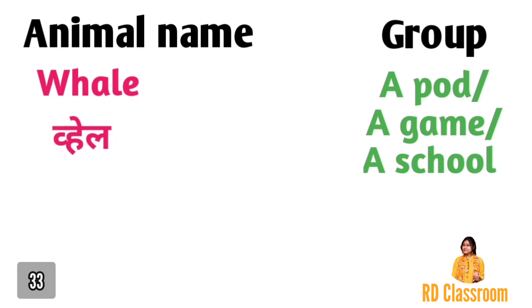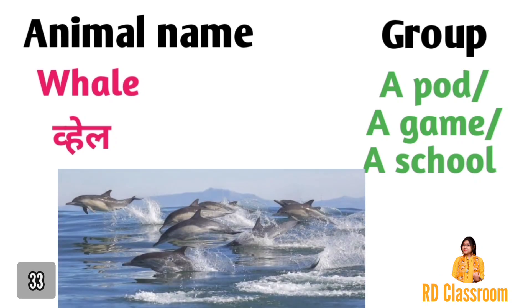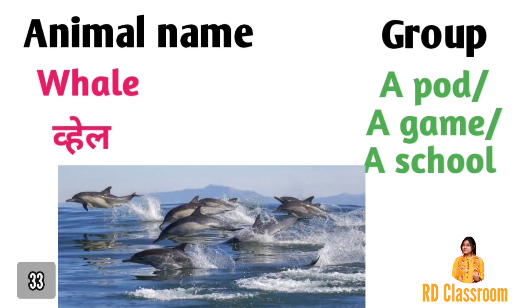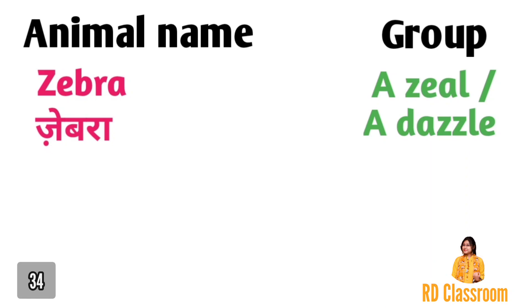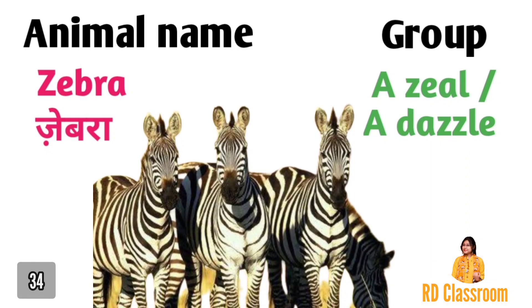Number thirty-three is whale, jiske group ko kaha jata hai a pod, ya fir a game, ya fir a school. Number thirty-four is zebra, jiske group ko kaha jata hai a zeal ya fir a dazzle.